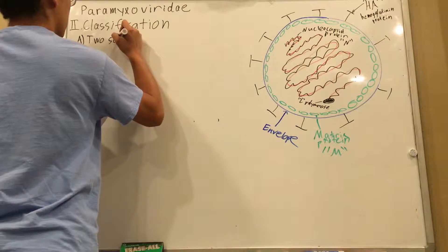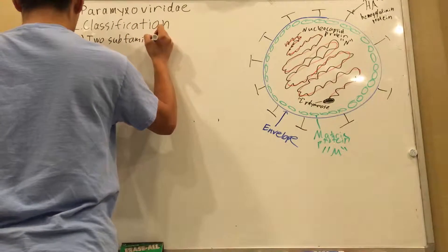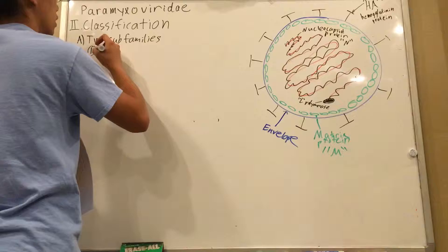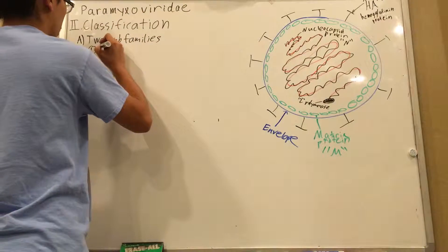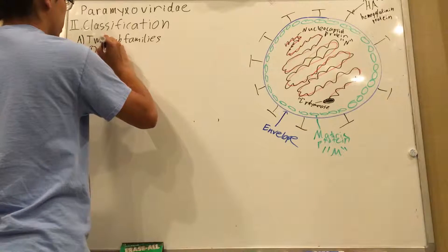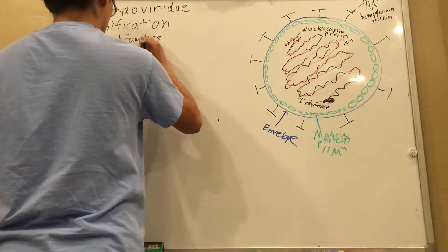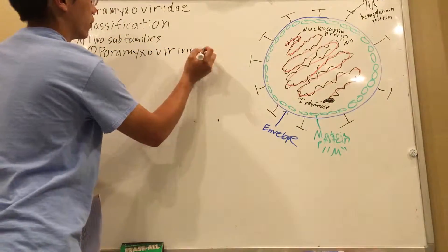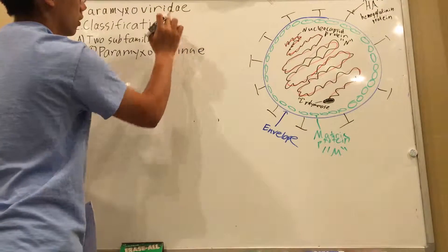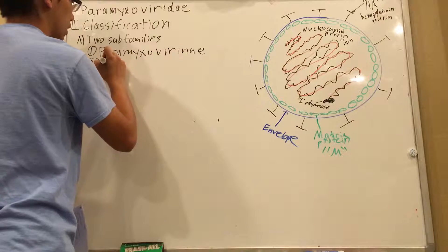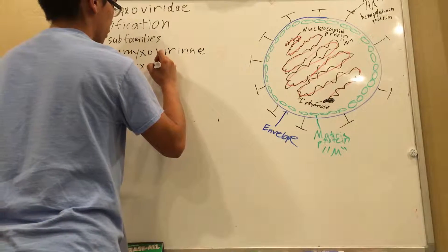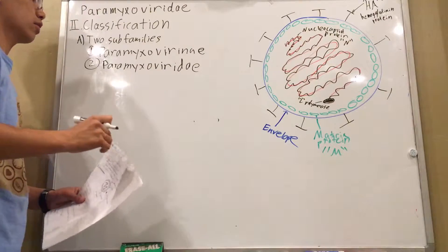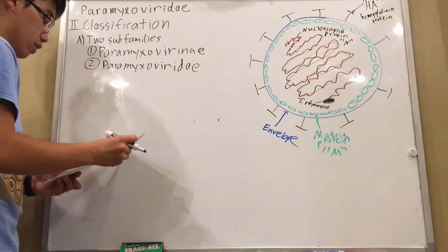So there are two subfamilies for this Paramyxoviridae family. Underneath this, there's two groups that comprise this: there's Paramyxovirinae. The difference between the names is literally just one letter, and then interestingly enough, the next family is Paramyxoviridae, which is the same thing. I don't know why they named it like that, but it is what it is.